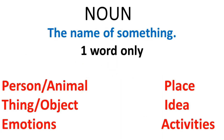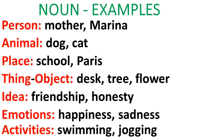Now let's look at noun phrases, but first let's understand what a noun is. A noun is only one word and it is the name of something. It could be a person or an animal, a thing or an object, an emotion, a place, an idea or an activity. Examples: a person could be mother or a name like Marina; an animal like a dog or a cat; a place like school or Paris; a thing like a desk, tree, or flower; an idea like friendship or honesty; an emotion like happiness or sadness; or an activity like swimming and jogging.